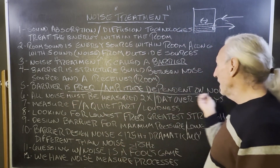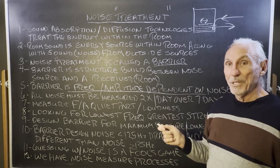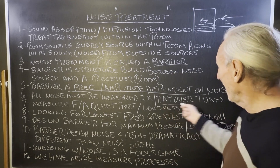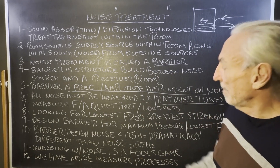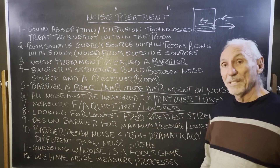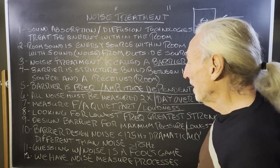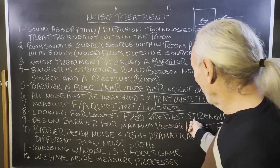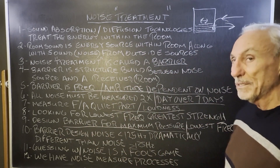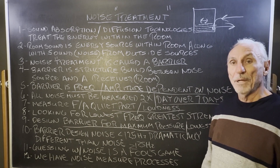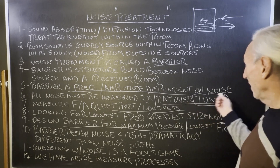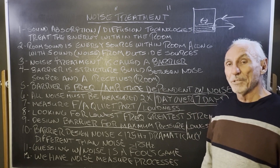The barrier is frequency and amplitude dependent, which means we've got to measure noise because we've got to know what frequency and what amplitude it is. We have to measure it over seven days, twice a day, because we're looking for the lowest frequency that has the greatest amplitude. We're looking for the lows that have the greatest strength, and then we get a good pressure map picture of everything that's going on.